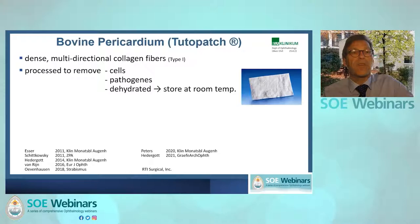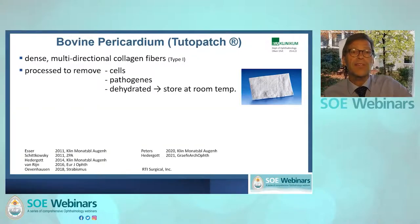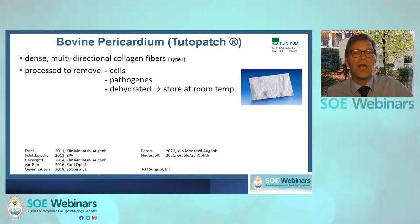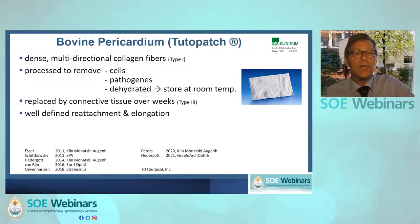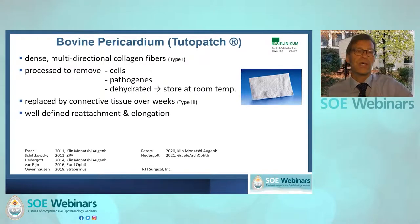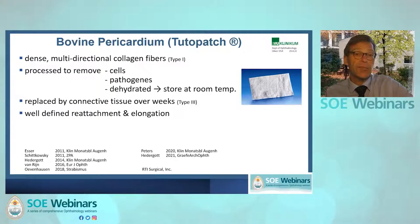Tutopatch is bovine pericardium processed to remove cells, pathogens, and any bacteria or viruses, then dehydrated so it can be stored at room temperature. Once you use it, you put it into saline solution and after five minutes it's flexible and ready for surgery. It is replaced by connective tissue of the patient over weeks, giving an appearance that after a while looks just like normal tendon. The advantage is that it gives a very well-defined reattachment of the muscle, providing a defined elongation and recession if desired.